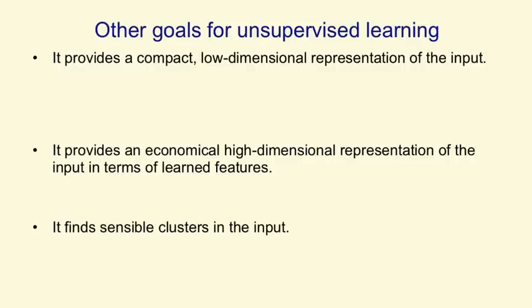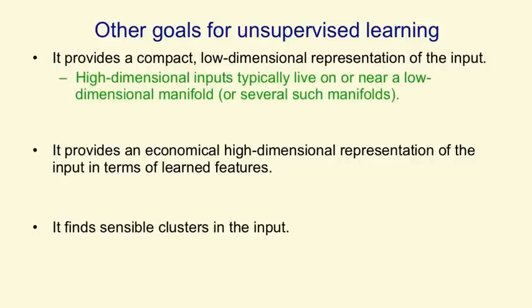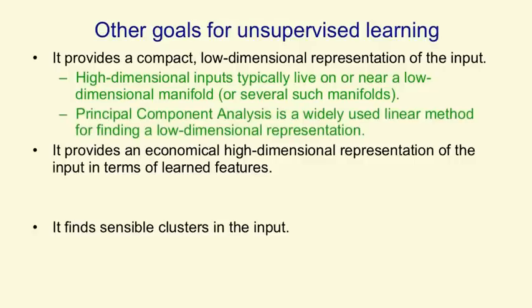Other goals for unsupervised learning are to provide compact, low-dimensional representations of the input. High-dimensional inputs like images typically live on or near a low-dimensional manifold — or several such manifolds in the case of handwritten digits. Even if you have a million pixels, there aren't really a million degrees of freedom; there may only be a few hundred. So what we want to do is move from a million pixels to a representation of those few hundred degrees of freedom, equivalent to saying where we are on a manifold — and also which manifold we're on. A very limited form of this is principal components analysis, which is linear and assumes there is one manifold that is a plane in the high-dimensional space.